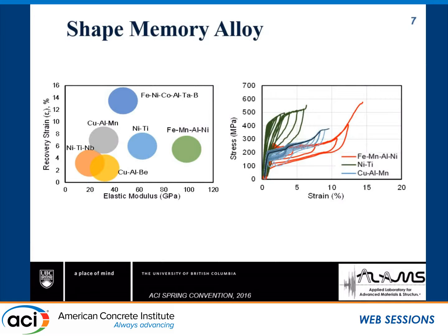This shows the superelastic behavior of the material under cyclic tension. All of them show flag-shaped hysteresis, but their modulus of elasticity, strength, and recovery strain are different. Some can go to larger strain levels with much larger recovery strain. The stress-strain behavior shows a plateau, and then fracture. If you go beyond a certain strain level, you lose superelasticity. We want to limit it within the recovery strain so that it can always return to the origin — that is our purpose for using it in structures in seismic regions.